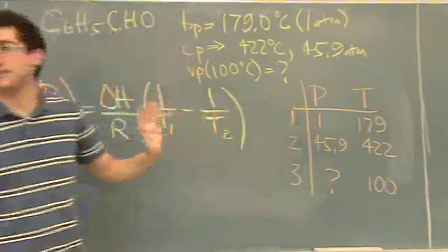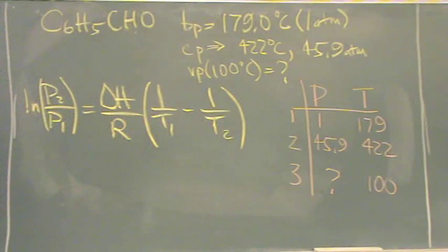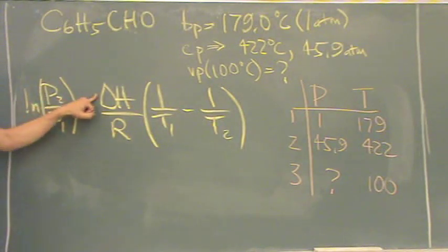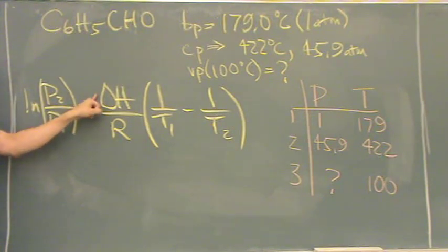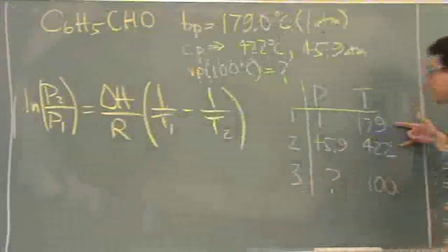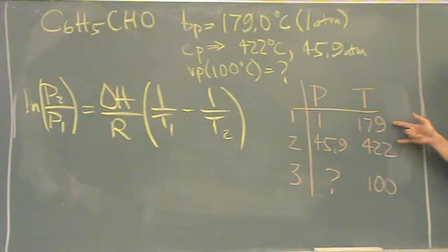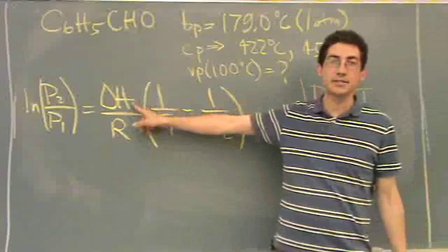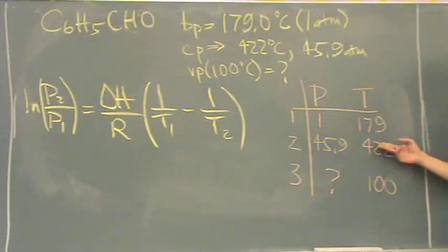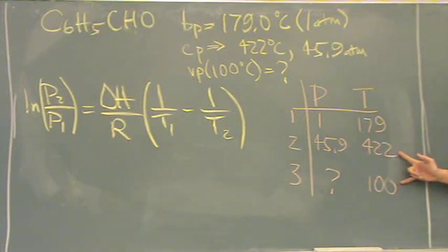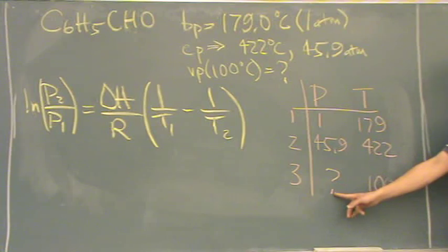We're given two points. There's a specific reason why we're given those two points. Usually, in a question, they give you delta H. In this question, they did not. So, you actually have to use this equation twice. You're going to take the two points that you know, these two, and your only unknown will be delta H. Then, you're going to pick either one of these points, it doesn't matter, and use it in conjunction with the third point to find your pressure.